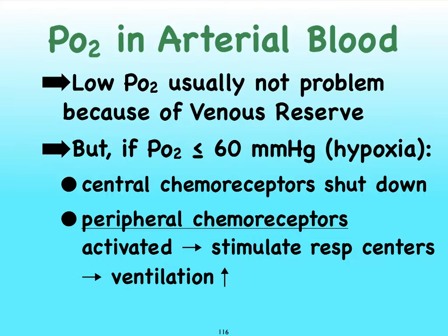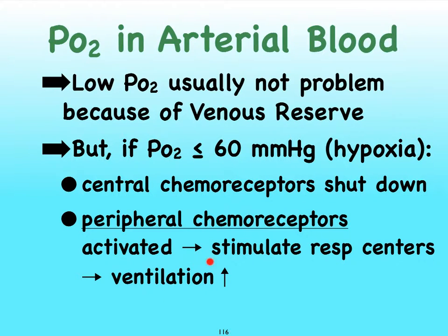Let's take a look at the impact of partial pressure of oxygen in our arterial blood. Remember your hemoglobin saturation curve — we typically don't have much of a problem with a low oxygen level because of our venous reserve. However, if oxygen levels start to drop well below about 60 mmHg at sea level, we're going to go into hypoxia. At that point, our central chemoreceptors are not going to be able to function, so instead the peripheral chemoreceptors become activated and stimulate our respiratory centers to increase ventilation.